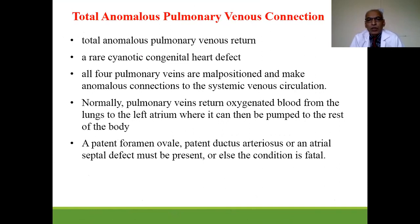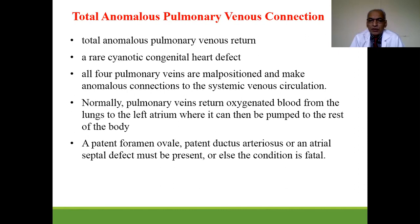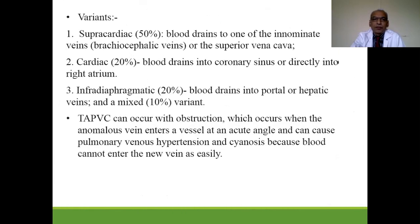TAPVC — total anomalous pulmonary venous return or connection — is a rare cyanotic congenital heart disease. All four pulmonary veins are malpositioned and make anomalous connections to the systemic venous circulation. Normally, pulmonary veins return oxygenated blood from the lungs to the left atrium. Patent foramen ovale, patent ductus arteriosus, or ASD may be present; otherwise this condition is very fatal.